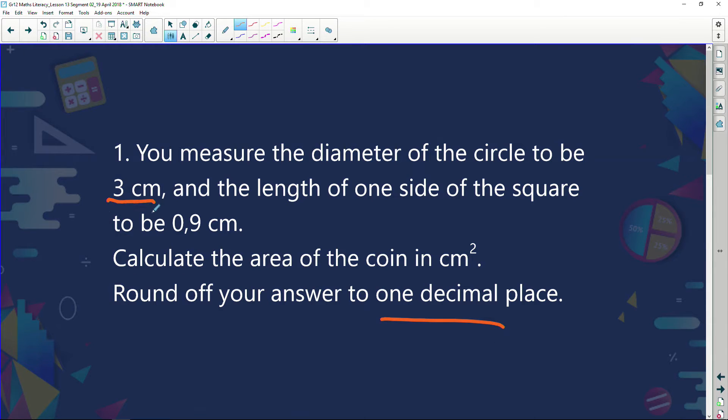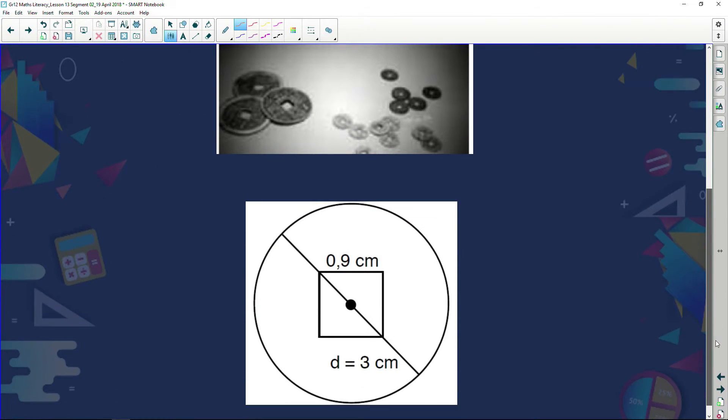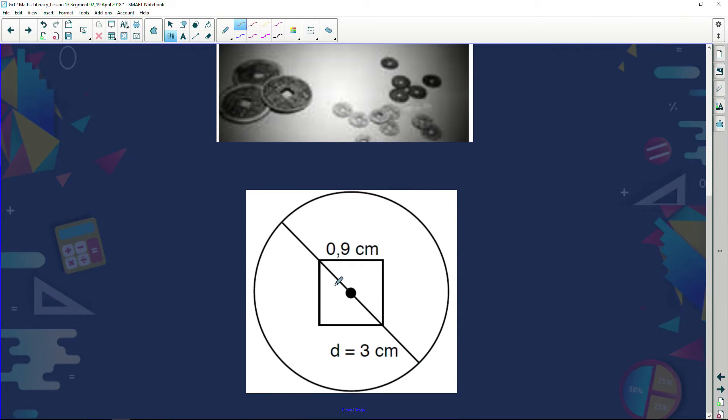Let's take all this information, and we're going to put it on our diagram. The diameter of the circle is three centimeters. So let's go back, let's have a look at our circle, and we're saying that the diameter of the circle is three centimeters. Now, if the diameter is three centimeters, what's my radius?